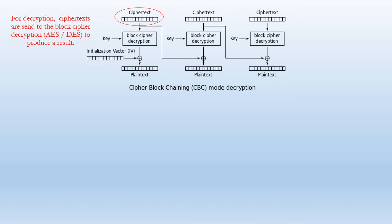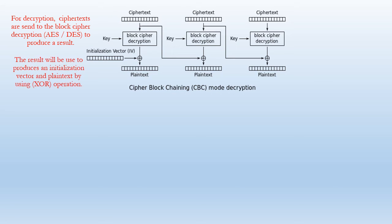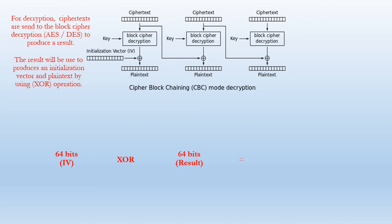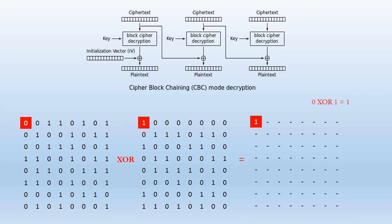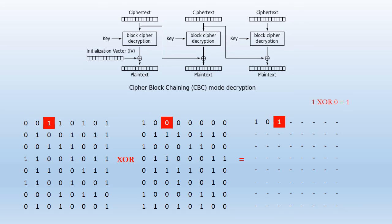For decryption, cipher texts are sent to the block cipher decryption to produce a result. The result will be XORed with the initialization vector to produce the plain text. The XOR operation compares and produces the plain text bit by bit. Based on the example, the first bit of the result will be 1 and the second bit will be 0.